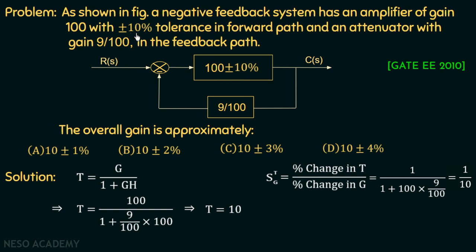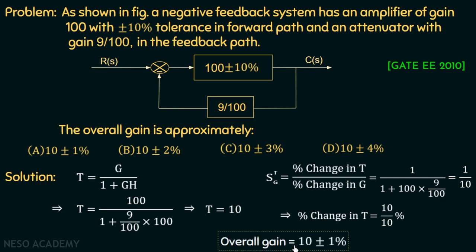The percentage change in G is 10% since the forward path gain has a tolerance of 10%. Rearranging: percentage change in T = sensitivity × percentage change in G = (1/10) × 10% = 1%. So the overall tolerance of the system is 1%, giving an overall gain of 10 plus/minus 1%. There is a deviation of 10% in the forward path gain, but due to negative feedback the overall deviation decreased to 1% — this is the advantage of negative feedback.